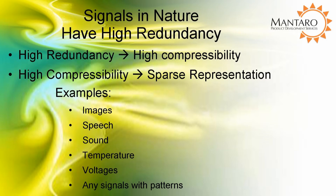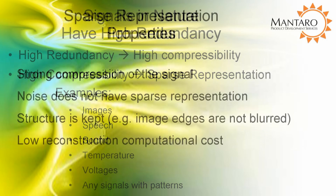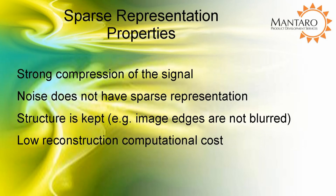Signals and images in nature are highly redundant. Highly redundant signals are very compressible and therefore have a sparse representation. Examples range from images, speech, sound, and in general any signal that has a pattern. The sparse representation is a highly compressed form of a signal which is well suited for transmission and storage. Since random noise does not have structure, it is readily filtered out of the signal.